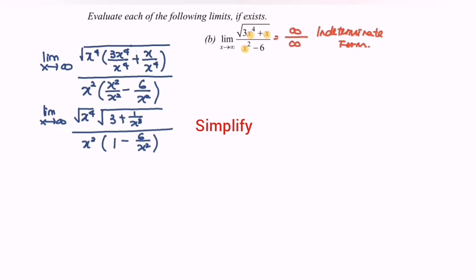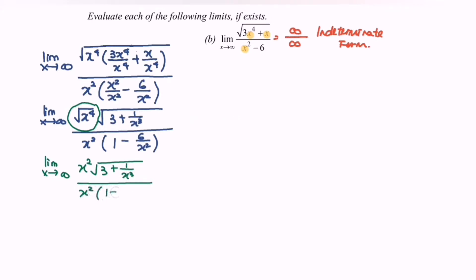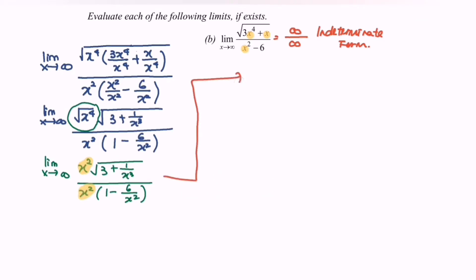Now we simplify. We have the limit as x approaches positive infinity of: square root of x to the power 4 — which gives x squared — times the square root of 3 plus 1 over x cubed, over x squared times the bracket 1 minus 6 over x squared. We notice there are common terms, so we simplify to get the limit as x approaches positive infinity of: square root of 3 plus 1 over x cubed, over 1 minus 6 over x squared.